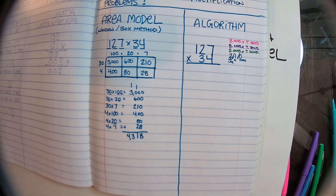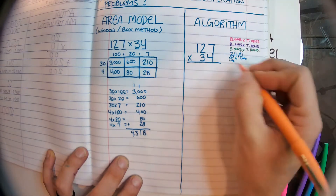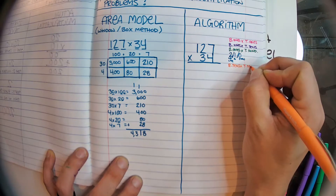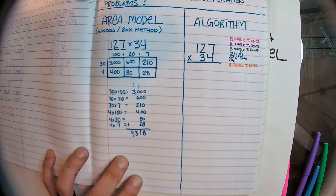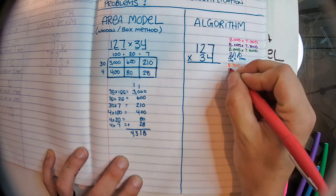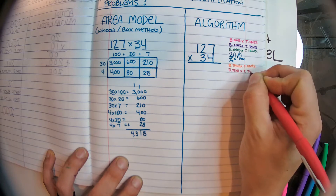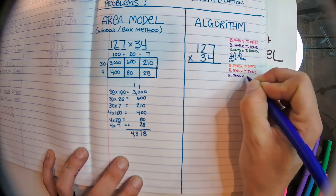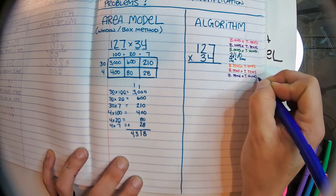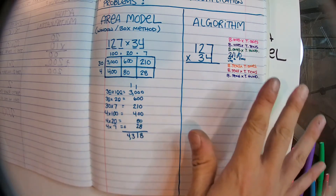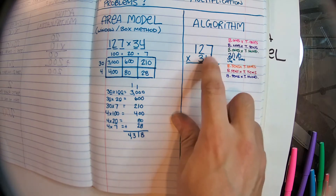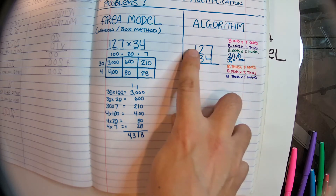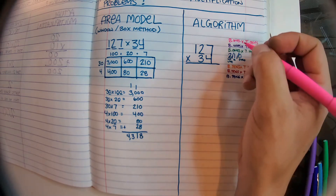After that, we're going to do bottom tens times top ones, then bottom tens times top tens, and finally bottom tens times top hundreds. So the full steps are: B ones × T ones, B ones × T tens, B ones × T hundreds, second line ones place zero, B tens × T ones, B tens × T tens, B tens × T hundreds. We're going to follow that with our colors.